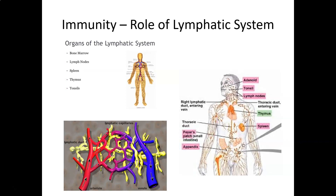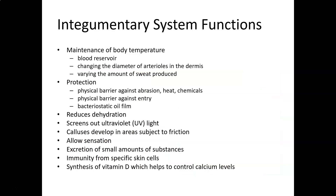The lymphatic system is made up of a number of different structures: bone marrow, lymph nodes, spleen, thymus, tonsils, and your appendix are all examples of lymph tissue. The immune system is often considered to include the lymphatic, cardiovascular, and integumentary systems. Let's look at some of the integumentary system functions.